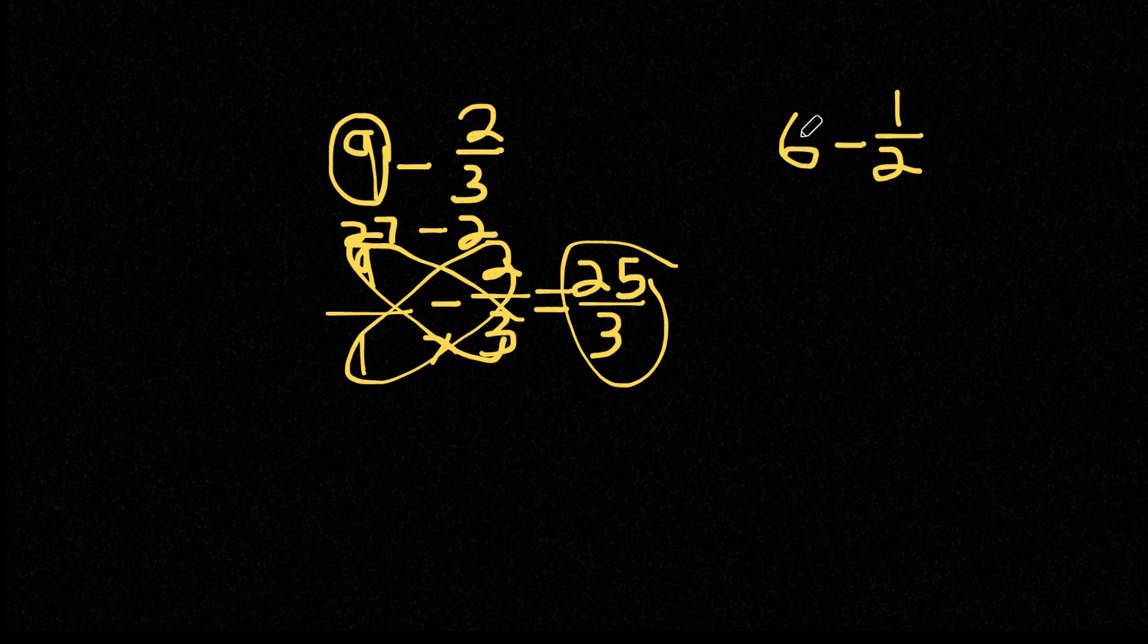So remember, our first step is to convert the whole number here, which in this case is 6, into its fraction form. And remember, any whole number in its fraction form is simply it over 1. So 6 in its fraction form, that's going to be 6 divided by 1, and we're going to subtract this with 1 half.